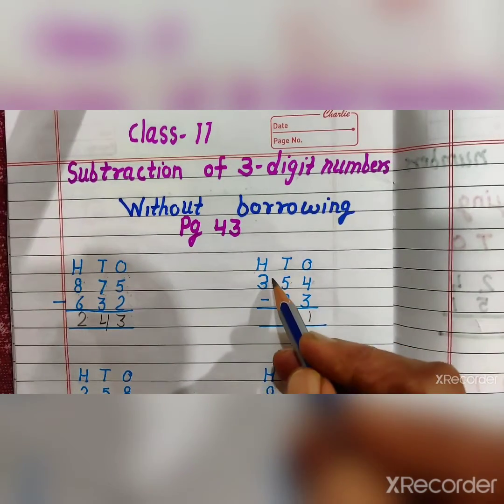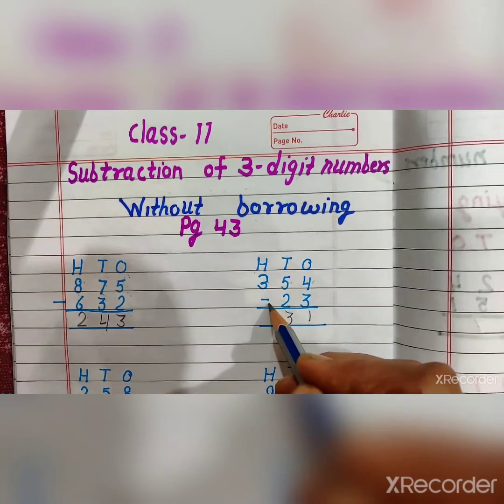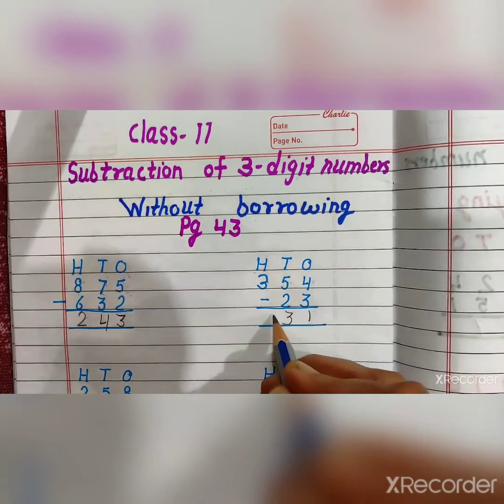And next, hundred's place. 3 minus 0. Now we have nothing. 3 minus 0 is equal to 3.